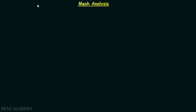We have completed KVL and KCL and now we are going to understand what is mesh analysis and how to perform the mesh analysis. The first question is why we use mesh analysis. When we analyze any electrical network our main aim is to obtain the power delivered or the power absorbed by different electrical elements. To have the power delivered or absorbed we need the voltage and the current, and using the mesh analysis we can find the unknown currents in the electrical network.